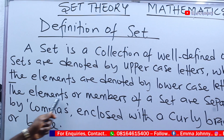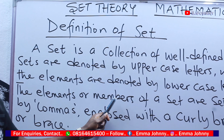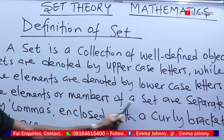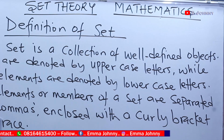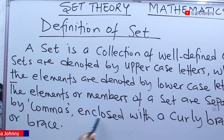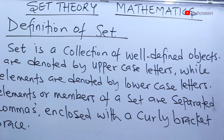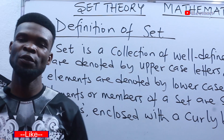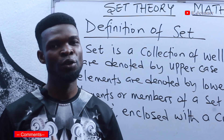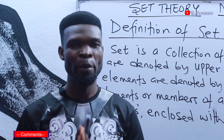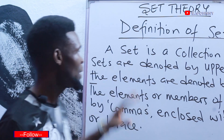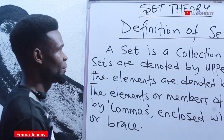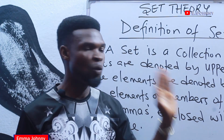The elements or members — you can call them either — are separated by commas and enclosed with a curly bracket, also called a brace. This first part of sets is full of explanation, but to summarize: a set is simply a collection of well-defined objects.